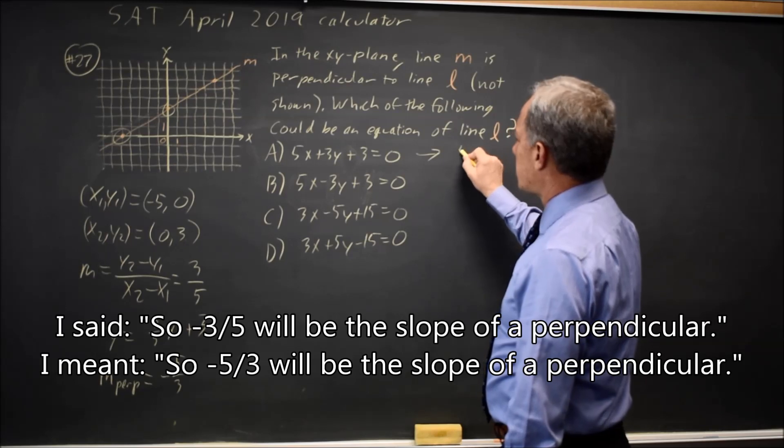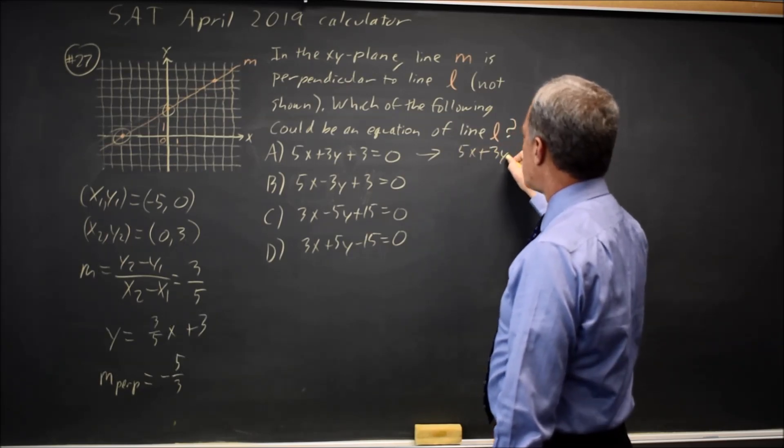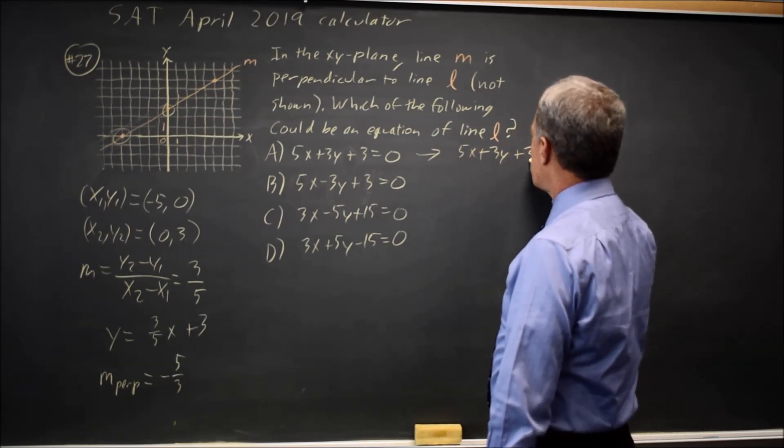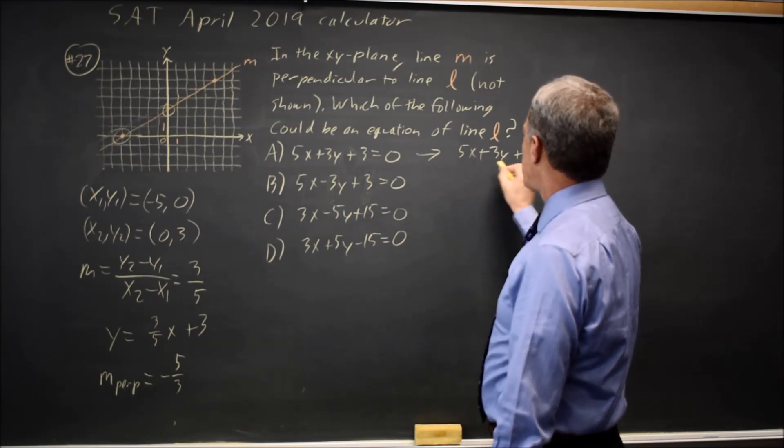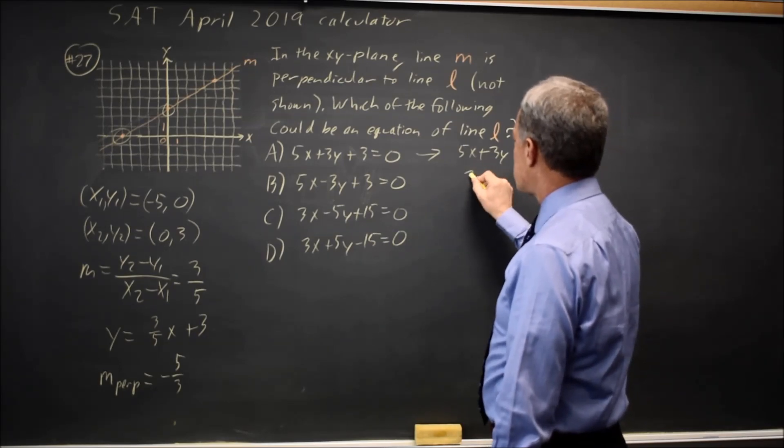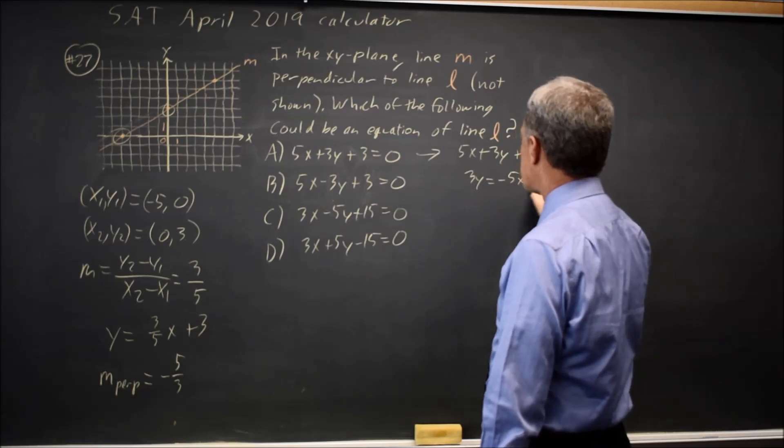In choice A, I have 5x plus 3y plus 3 equals 0. Let's move the 5x and the 3 to the right-hand side. So 3y equals negative 5x minus 3.